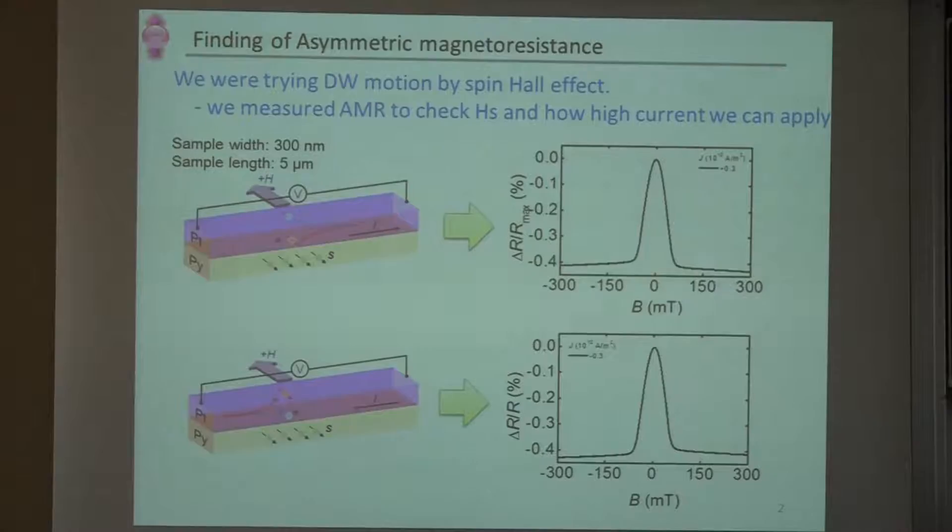Let me speak about how we found this magnetoresistance effect. About four years ago, we were trying to move domain walls in this bilayer by using spin Hall mechanism. We have this kind of bilayer: ferromagnetic permalloy and platinum. By injecting current through platinum, we expect spin current flows into the permalloy and gives a torque to move a domain wall.